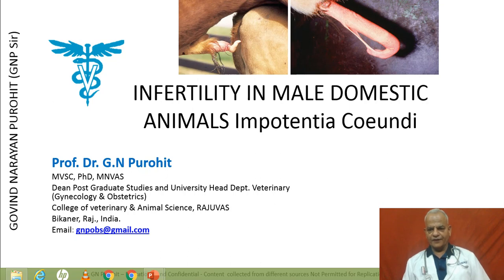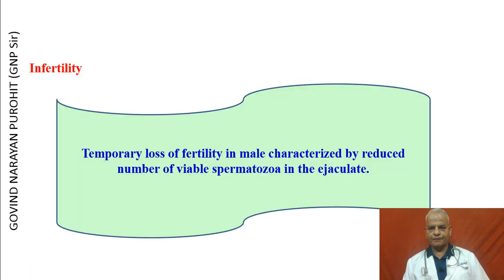In today's topic, we talk something about infertility in male domestic animals. The infertility, or the temporary loss of fertility in the male, is characterized by reduced number of viable spermatozoa in the ejaculate.